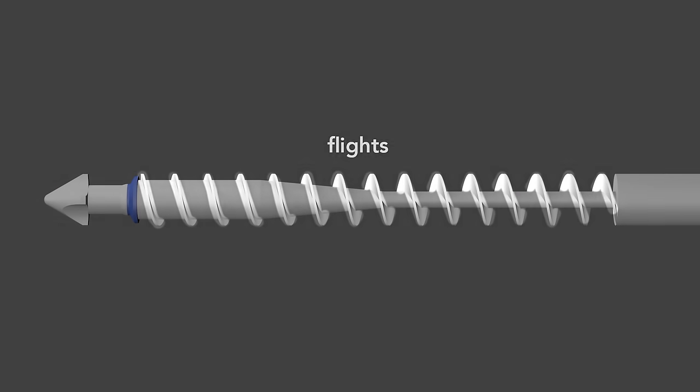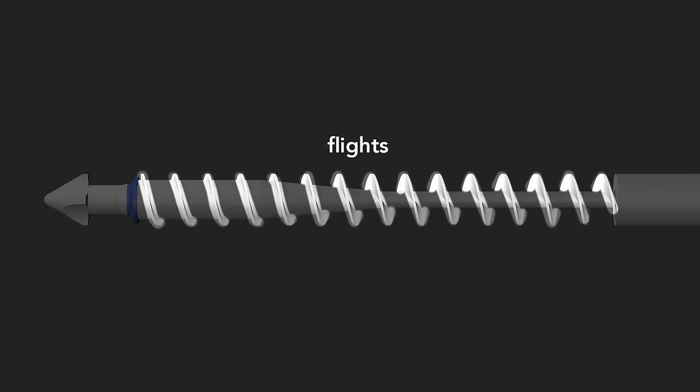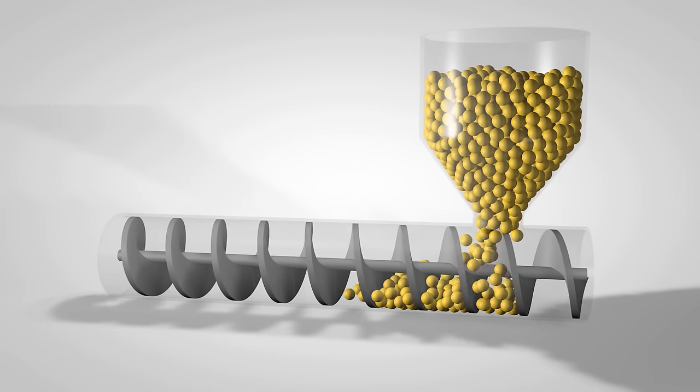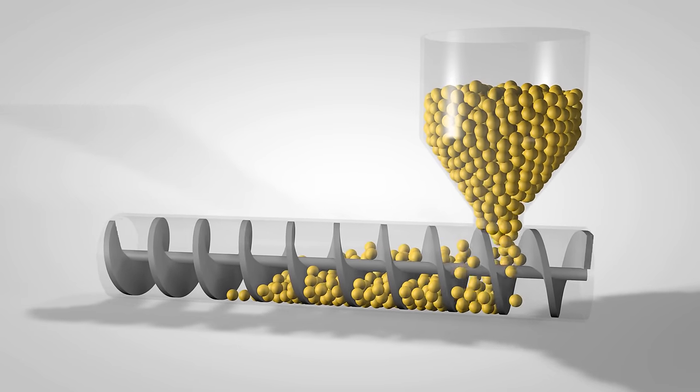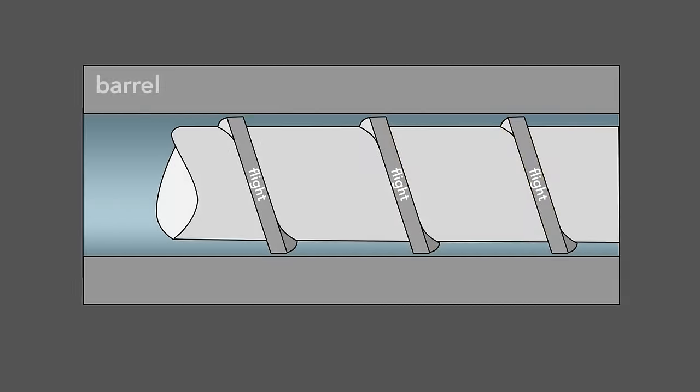Second, the screw has flights that wrap around the shaft. As the screw rotates, the flights transport the raw material forward through the barrel. The flights also serve to mix the plastic. The screw action agitates the melting pellets within the flights to create a uniform mixture.